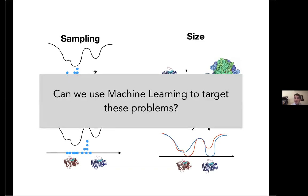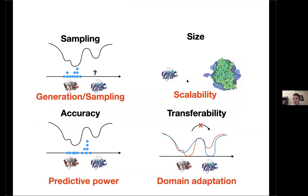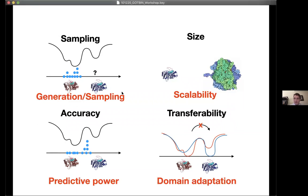This is where I ask: can machine learning help target any of these problems? Can we speed up any of these or bridge to larger scales with machine learning technologies? In reality, machine learning has many of the same problems: the sampling problem is known as generative modeling; accuracy is analogous to predictability; scalability to large datasets; and transferability corresponds to domain adaptation.